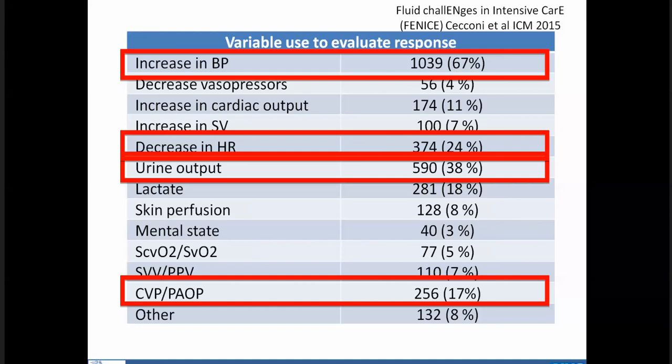At the bedside, blood pressure is often a trigger to give fluids, and increases in blood pressure are used to assess the fluid response. Decreases in heart rate and urine output are also used, even though the relationship between urine output changes and cardiac output changes is very poor. Changes in CVP are still used, even though physiologically that makes no sense. When blood pressure increases in response to a fluid bolus, that's a good sign — it means cardiac output has increased.